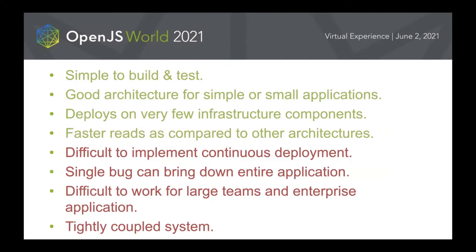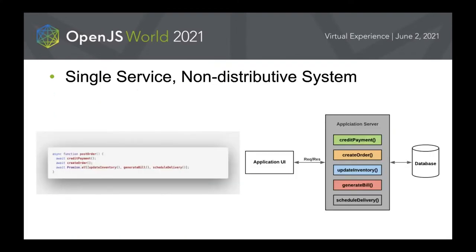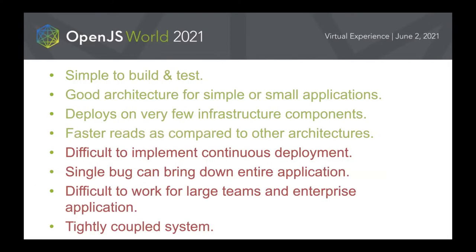If you look into the diagram, you will see the UI interacting with a single server where we have all the methods written. However, there are certain disadvantages. This does not work well if the business problem you look to solve is large and complex — it's difficult to implement continuous delivery since a single module change needs a complete redeployment and retesting. A single module failure can bring down the entire system. That's why we moved to microservice architecture.